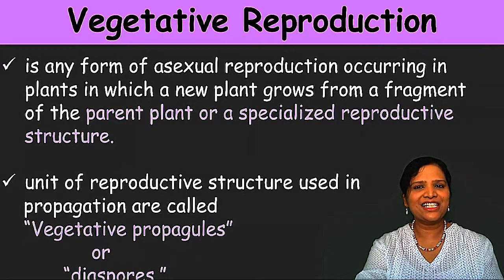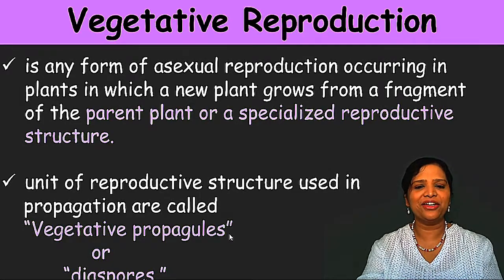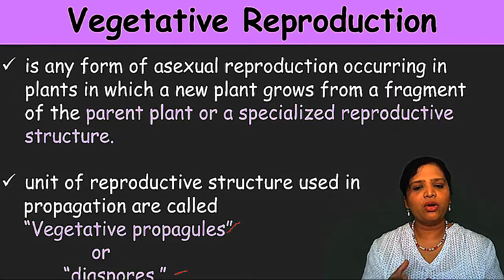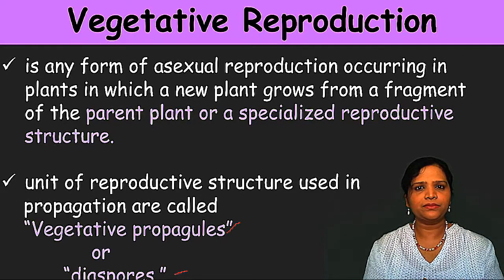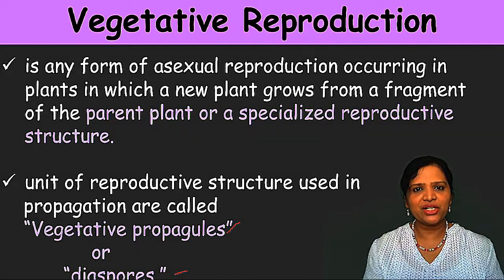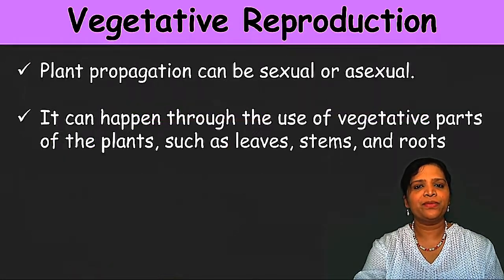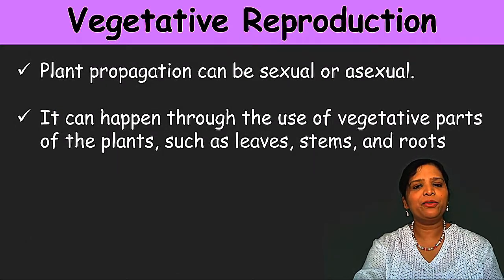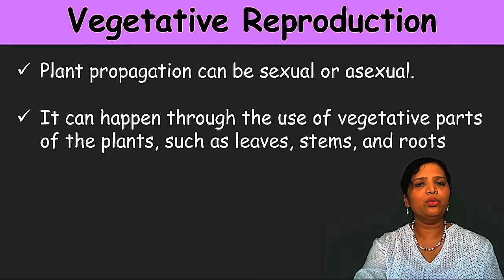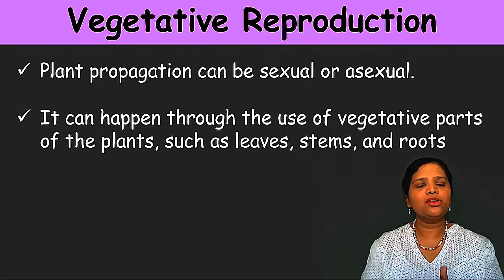The units of reproductive structures used in the propagation process are called vegetative propagules or diaspores. This is very important — you should remember that the asexual reproductive units in plants are called vegetative propagules. Propagules means they are like agents; these agents help the new plants to grow from them. Plant propagation or plant replication can be sexual or asexual. Here we are going to study only the asexual method, which can happen through vegetative parts of the plant such as leaves, stems, or roots.